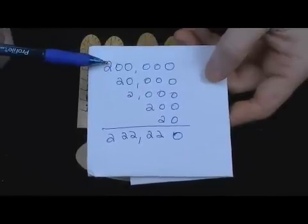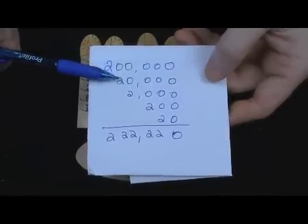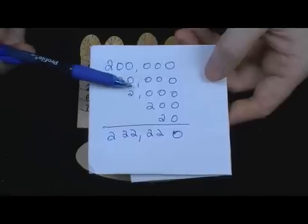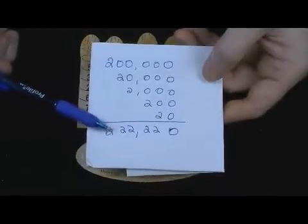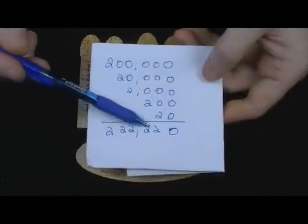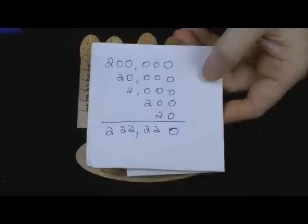20 groups of 10,000 is 200,000. 20 groups of 1,000 is 20,000, and so forth. And that sum will always equal 2, 2, 2, 2, 2, 2, 2, and the last digit will always be 0.